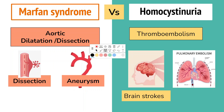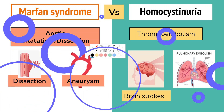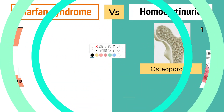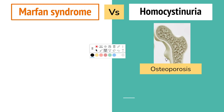Two potential cardiovascular complications in Marfan syndrome include aortic root dilatation and dissection, as well as aortic valve insufficiency. Whereas in homocystinuria there will be vaso-occlusive disease such as thromboembolism, brain stroke, or pulmonary embolism. Patients with homocystinuria will also have osteoporosis associated with compressed vertebral fractures, which are not typical features of Marfan syndrome.